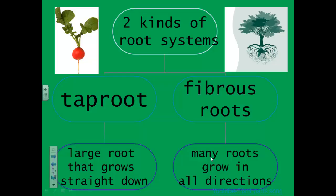Another root system is a fibrous root system. In this system, many roots grow out in all directions. The roots divide many times into smaller and smaller roots. The fibrous root of a tree sometimes looks like an upside-down version of the above-ground branches.